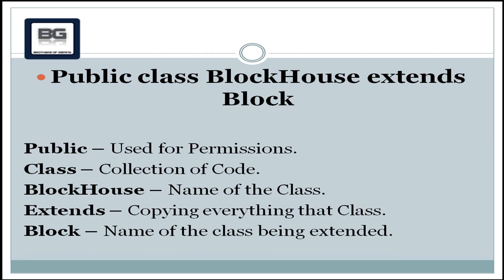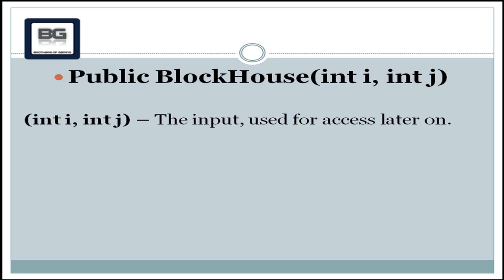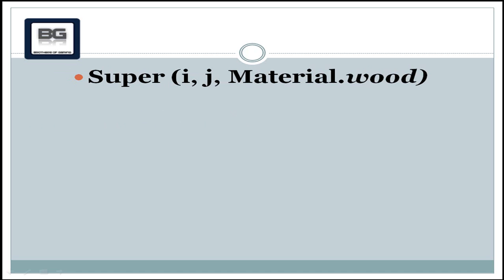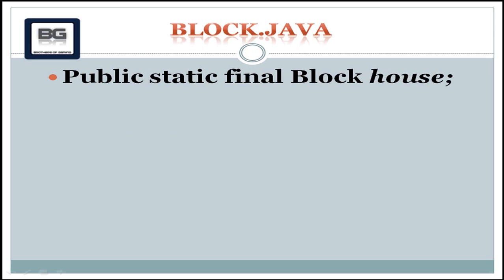Another thing we wrote is `public house(int i, int j)` — the int i and j are the inputs. For now let's not worry about them; we will use them for access later in another tutorial. The last line of code we wrote was `super(i, j, material)`. When we refer to super, that means we are calling the superclass and giving it three variables: i, j, and the material — in my case, wood.